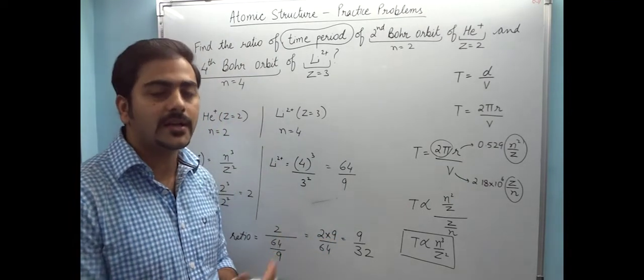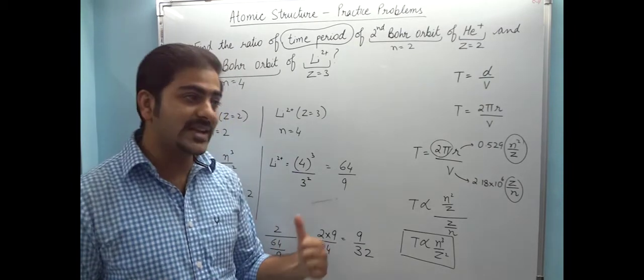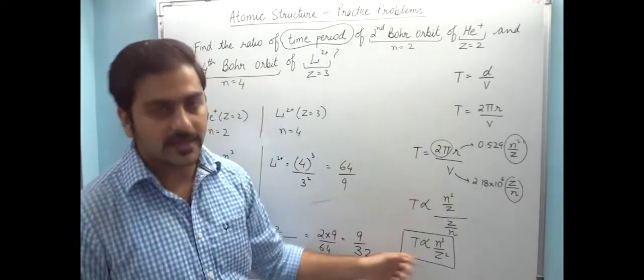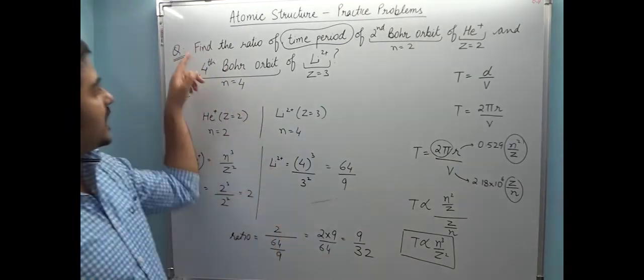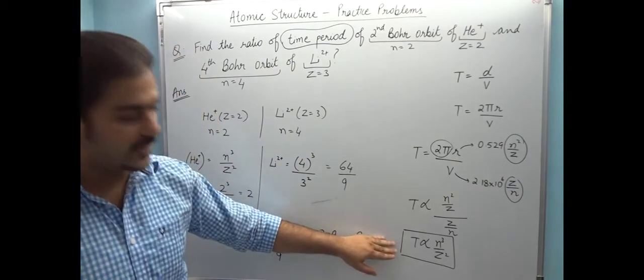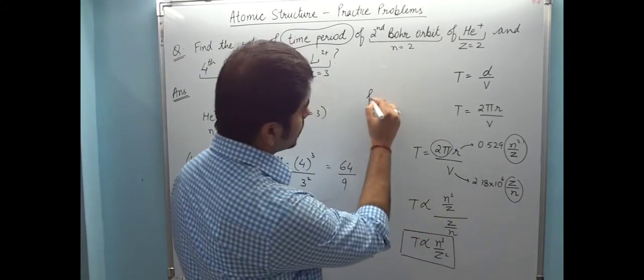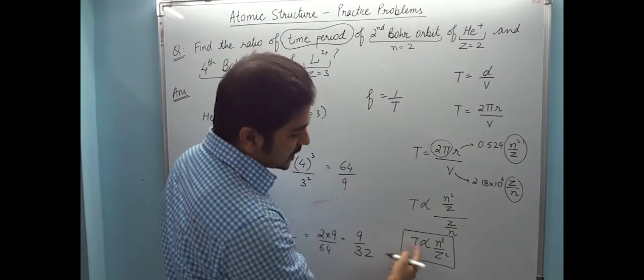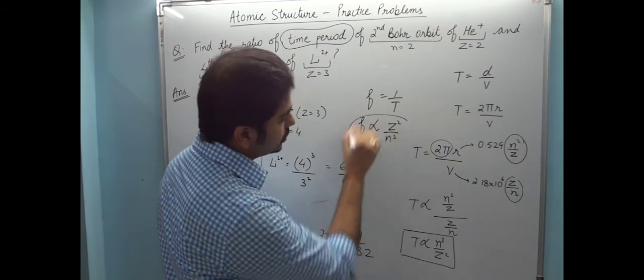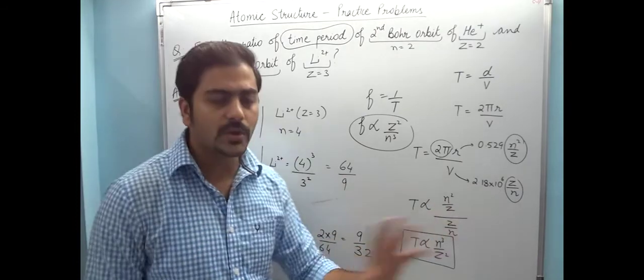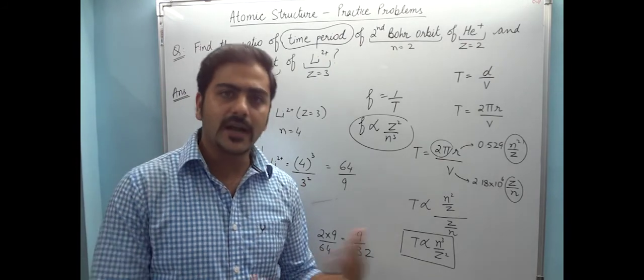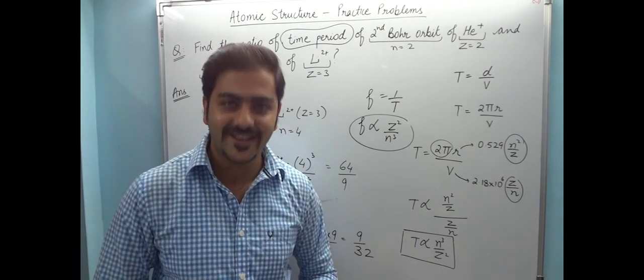If advance question comes, this will be considered a simple question. If NEET or medical question comes, this will be considered a good question. If you understand how to do this variation, if you have to find the ratio of frequencies, then what do you have to do? Frequency is 1/time period. Time period is proportional to n³/Z², so frequency would be proportional to Z²/n³. If you have any questions, in the next video lectures we will discuss more questions. Thank you.